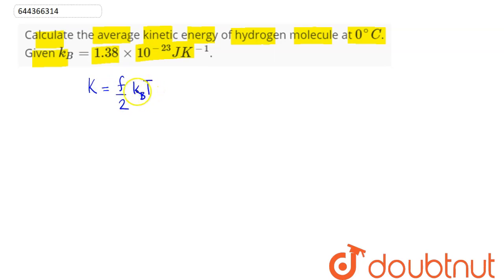Now we need the average kinetic energy for hydrogen molecule at 0 degree Celsius. So hydrogen is H2, which is diatomic, so it contains three translation and two rotation degrees of freedom, that is f equal to 5.